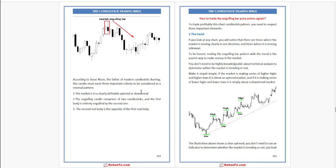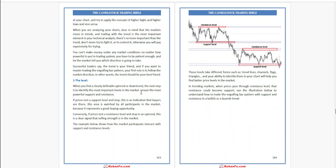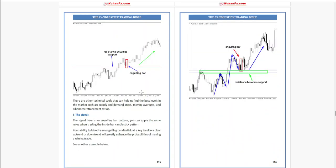Third, the second real body is the opposite of the first real body. How to trade the engulfing bar price action signal? To trade this chart pattern profitably, you need to respect three important elements: first is trend, second is level, and third is signal.